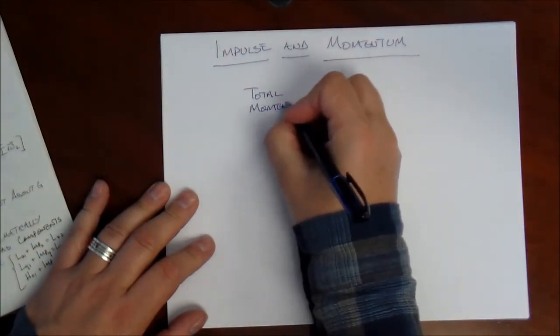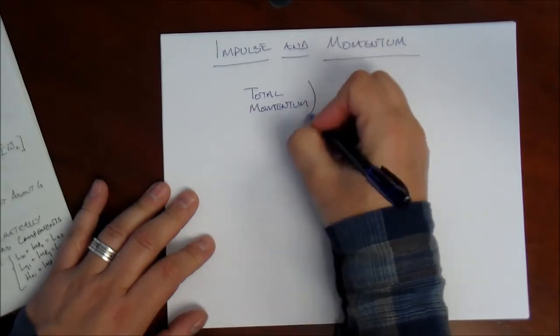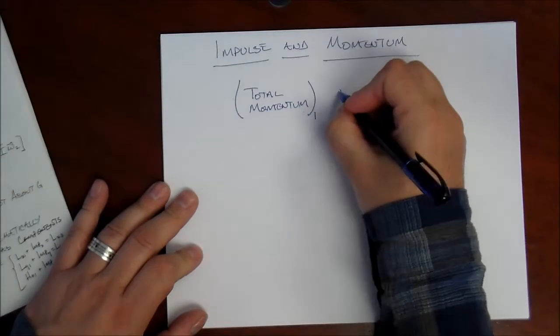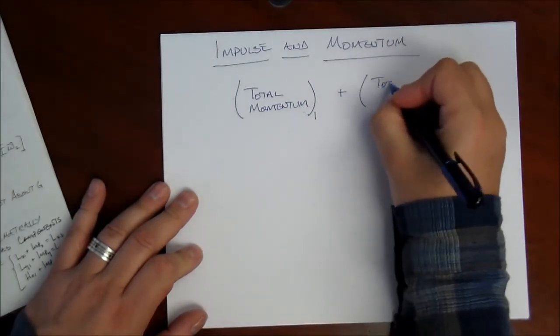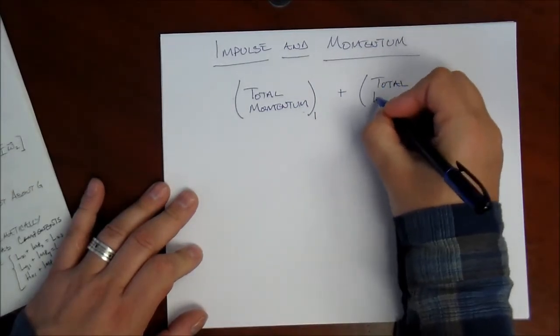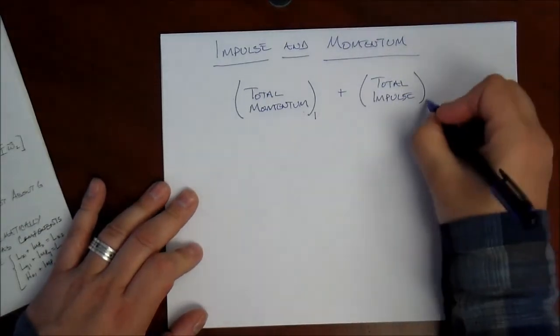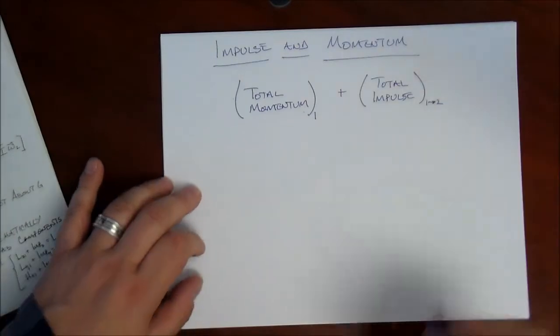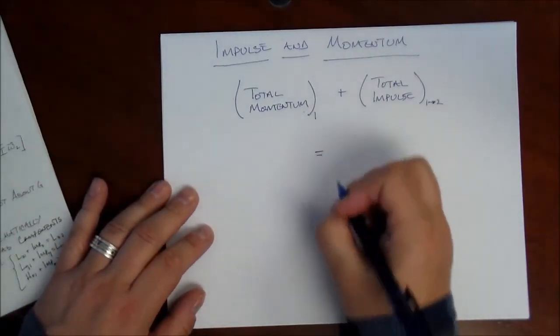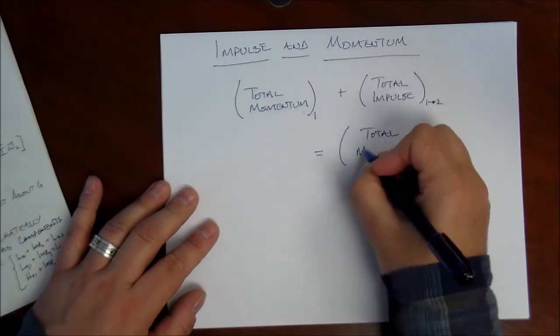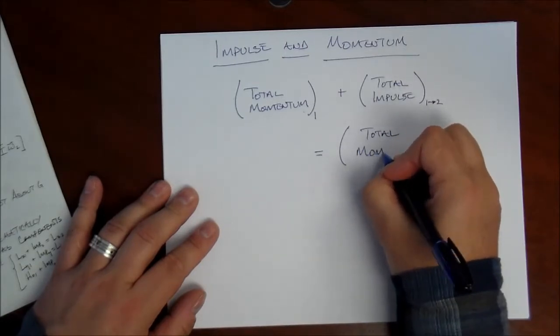That is the total momentum of the system initially, so I'll subscript that with a 1, plus the total impulse going from time 1 to time 2 is going to be equal to the total momentum after the impulse is applied.